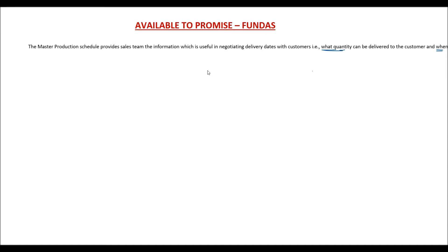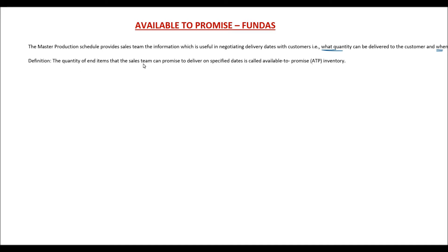Let us look at the definition: the quantity of end items that the sales team can promise to deliver on specified dates — the date and the quantity — is called Available to Promise inventory.